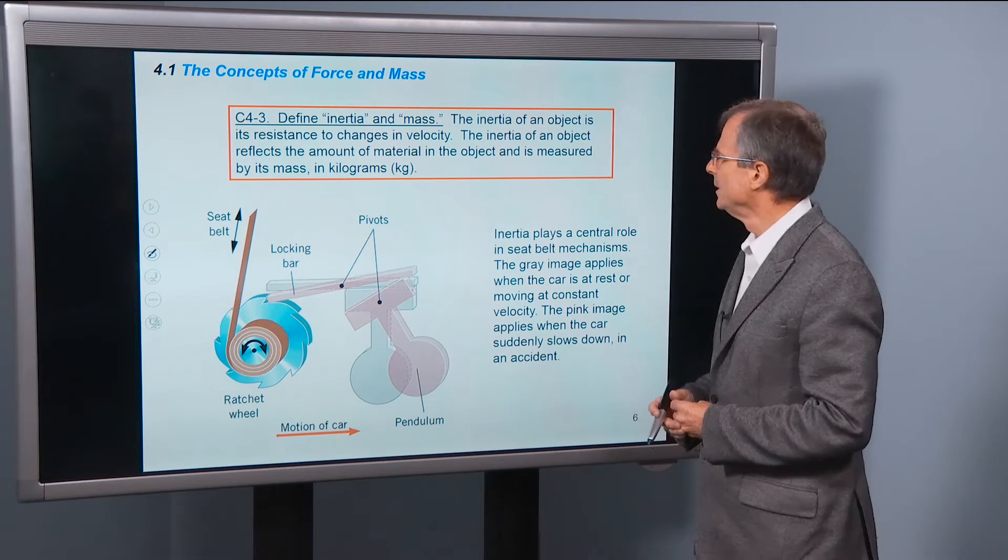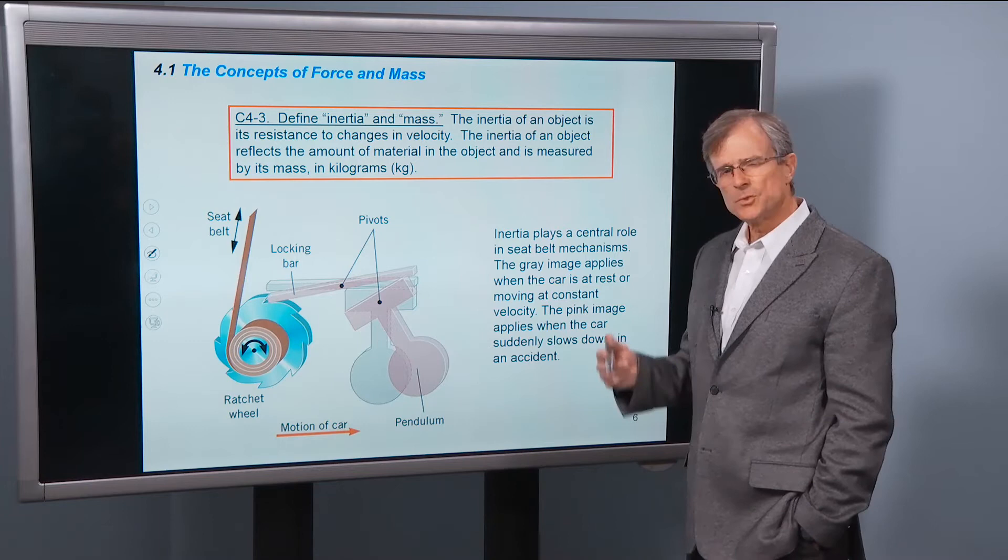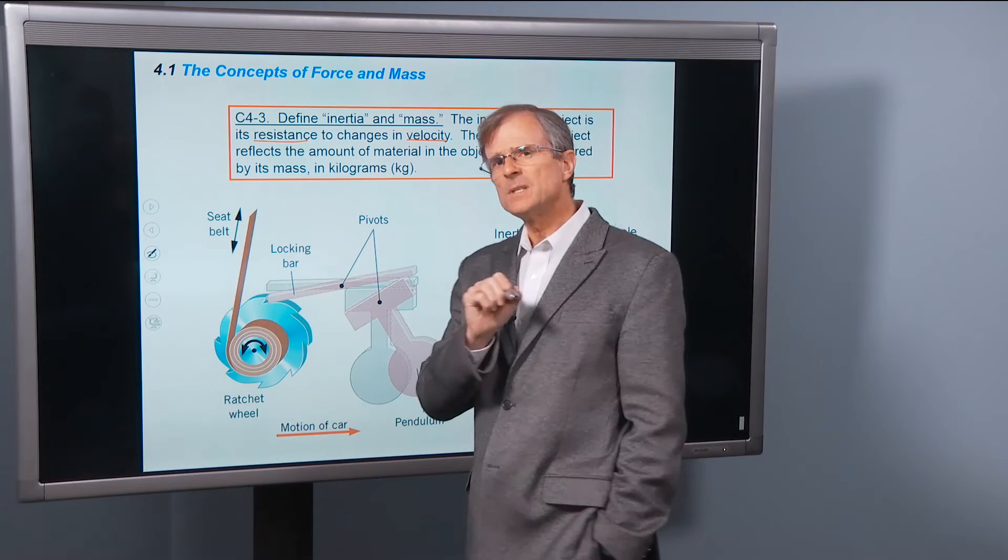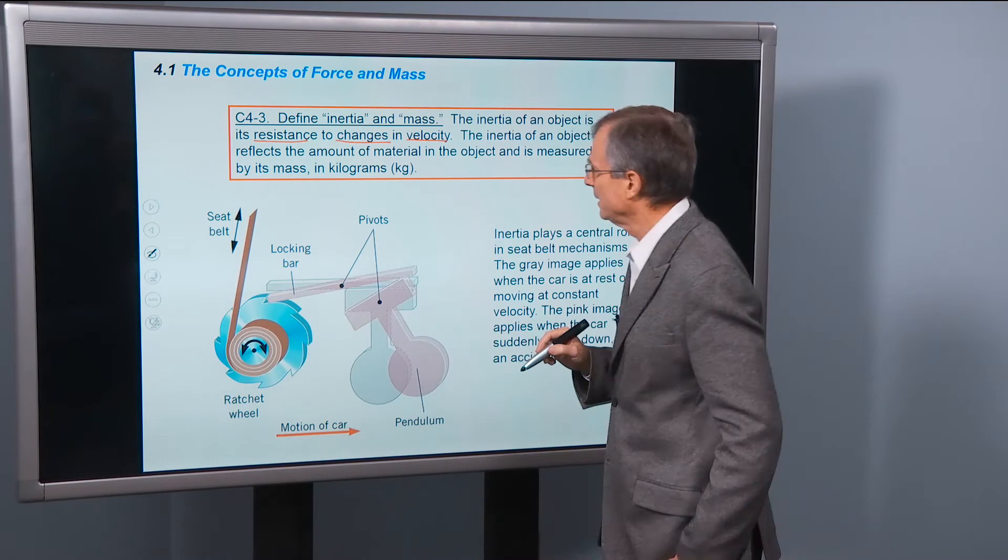Inertia and mass. The inertia of an object is its resistance to changes in velocity. And I'd like to make sure that you understand that it's not resisting velocity. It's resisting changes to the velocity. What do I mean by that?